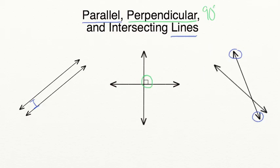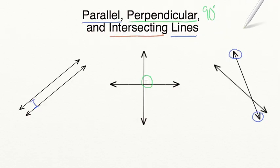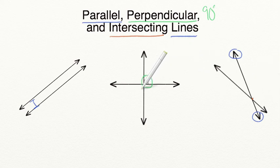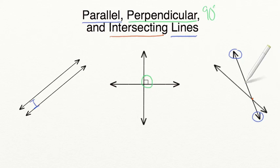Lastly, let's take a look at intersecting lines. Intersecting lines are just two lines that cross at the same point. You don't have to make sure that they're 90-degree angles — they just have to be crossing at one point.